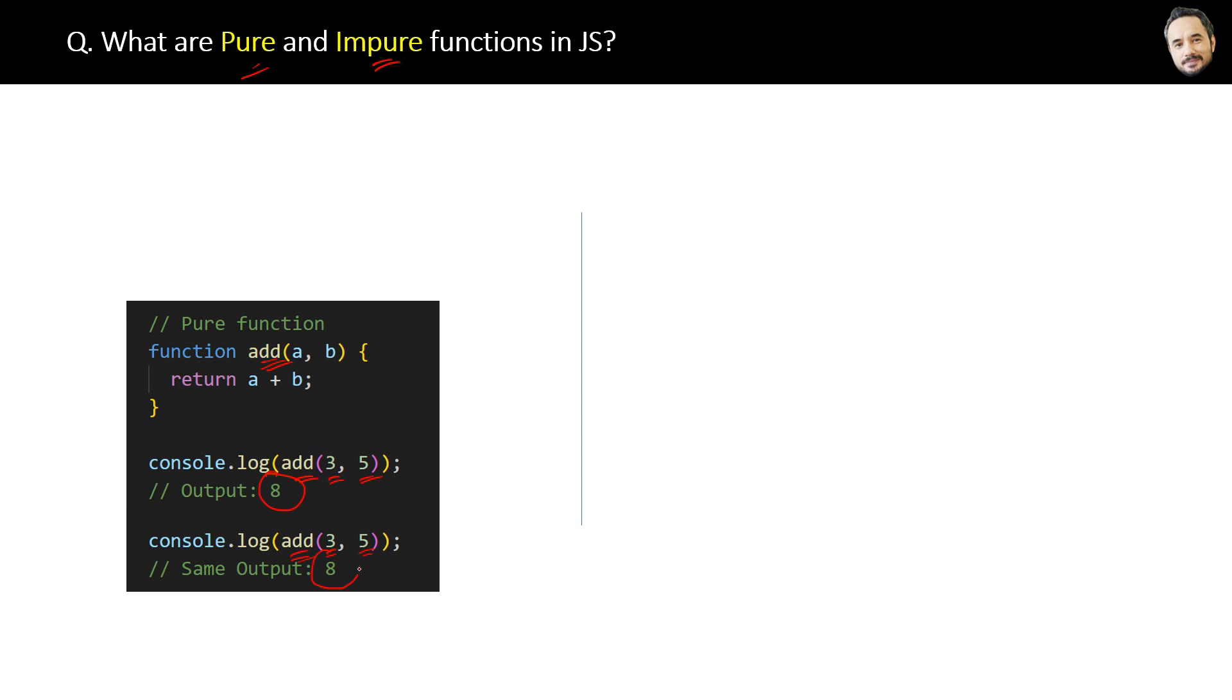every time it is going to give the same output. The definition of a pure function is: a pure function is a function that always produces the same output for the same input.